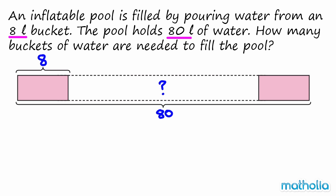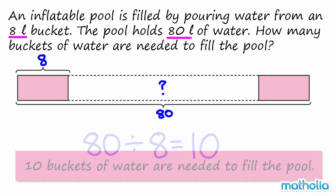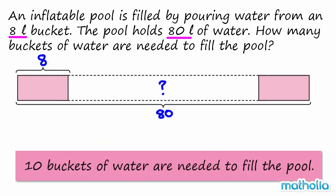To find the number of buckets, we must divide 80 by 8. 80 divided by 8 equals 10. So 10 buckets of water are needed to fill the pool.